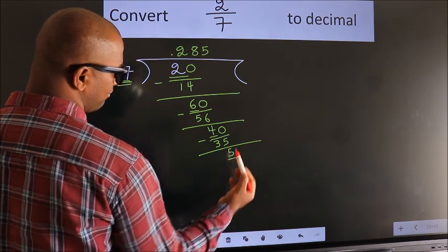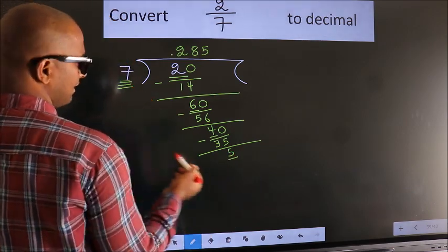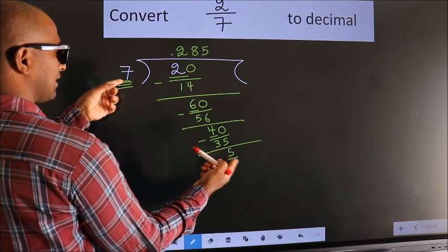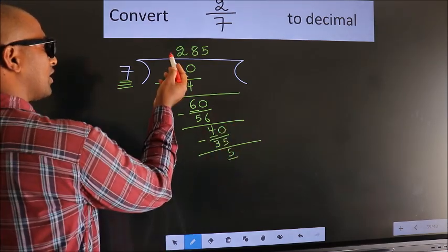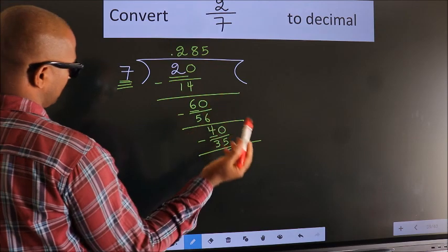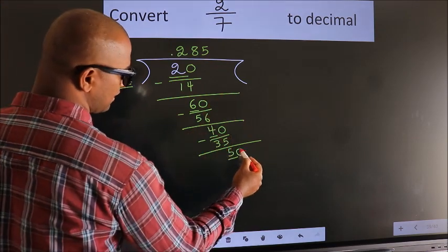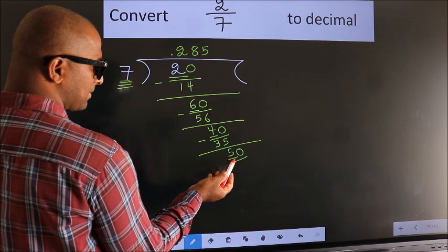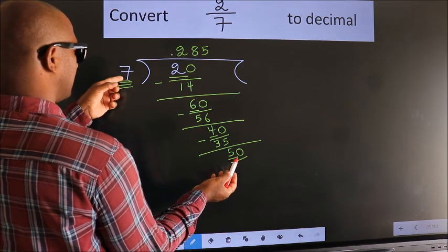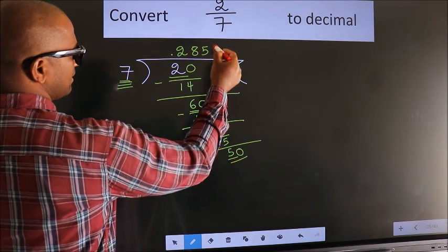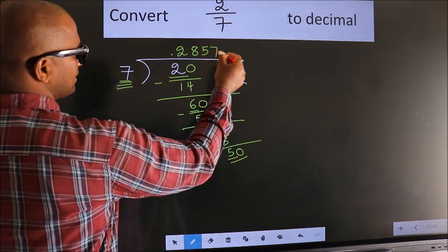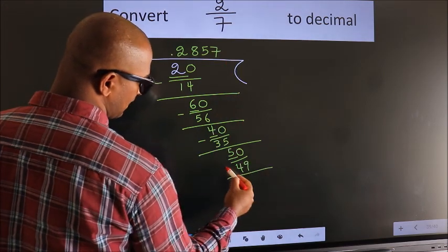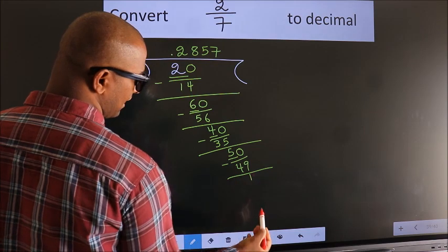Here we have 5, here 7. 5 is smaller than 7. And we already have the decimal, so we can directly take 0 — making it 50. A number close to 50 in the 7 table is 7 sevens 49. Now we subtract and we get 1.